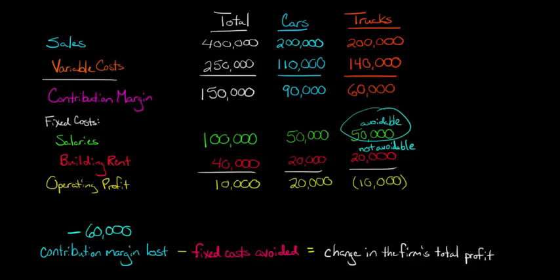So that $50,000 is avoidable. So we'll subtract $50,000 of fixed costs that are avoided. If we're subtracting this, it's the same as adding. If we're subtracting a negative number, it's the same as adding.